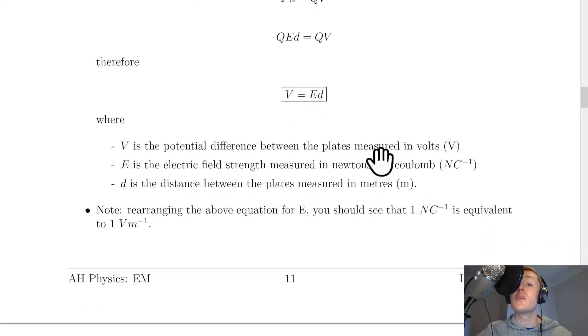Where v is the potential difference between the plates measured in volts, e is the electric field strength measured in newtons per coulomb, and d is the distance between the plates measured in meters.